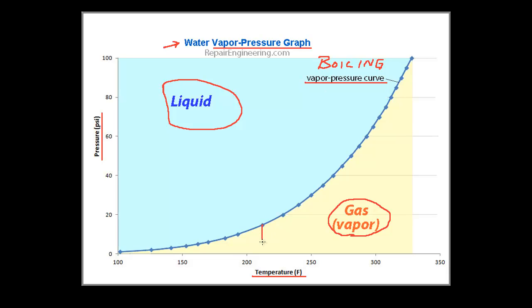To see how this graph works, let's use a couple of examples. Many people, when asked if they know the boiling temperature of water, will answer that it boils at 212 degrees Fahrenheit. This answer is partially correct. As shown by the graph, water does boil at 212 degrees Fahrenheit at the standard atmospheric pressure at sea level of 14.7 PSI. However, notice that the boiling temperature of water changes with its pressure. In general, lower boiling temperatures correspond with lower pressures, and higher boiling temperatures correspond with higher pressures.